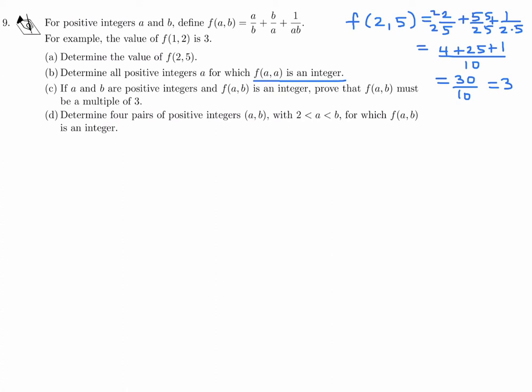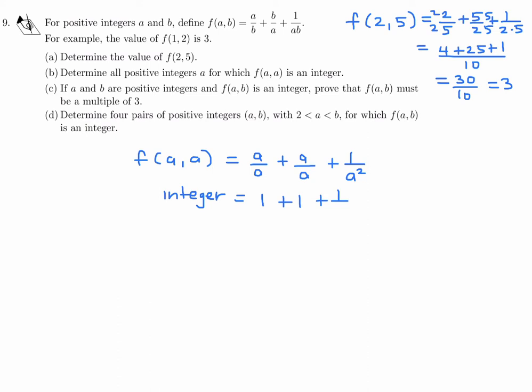Part b: Determine all positive integers a for which f(a, a) is an integer. f(a, a) equals a/a + a/a + 1/a² = 1 + 1 + 1/a² = 2 + 1/a². For this to be an integer, 1/a² must be an integer. Since a is a positive integer, the only way is if a equals 1, making 1/a² = 1. Any integer greater than 1 makes 1/a² a fraction, so a equals 1 is the only solution.